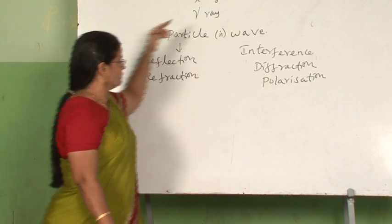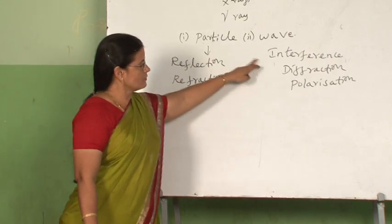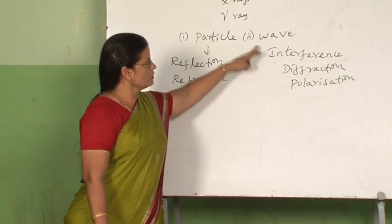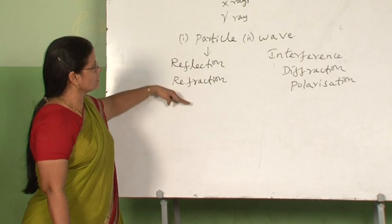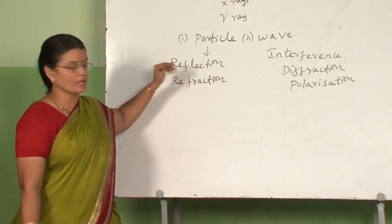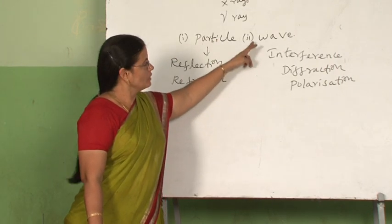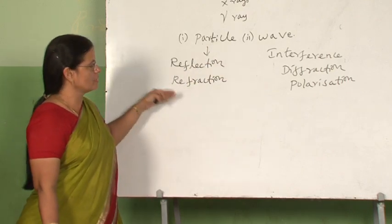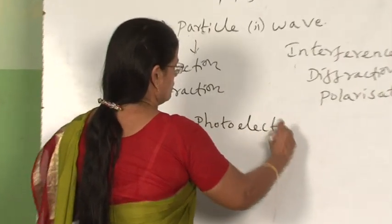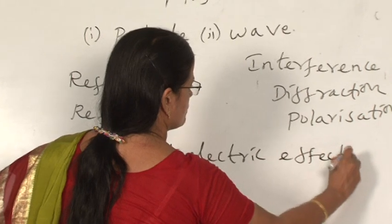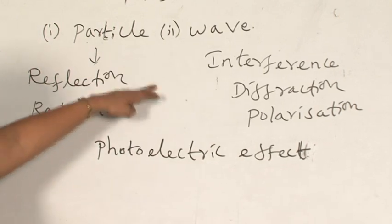Wave theory can also explain reflection and refraction, but interference, diffraction, and polarization could be explained only based on the wave theory. The particle nature of light radiation was proposed first by Newton, then Huygens found out the wave theory, and using wave theory he could explain even reflection and refraction. But when the photoelectric effect was discovered, this wave theory failed in explaining it.